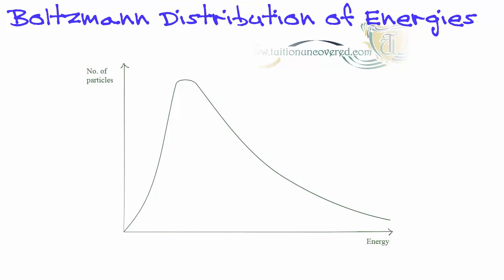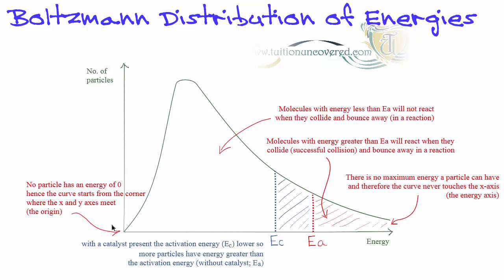Various parts of this need to be addressed. First of all, the origin, where x and y meet. There is no particle with zero energy. Every particle must have some energy, even if it's only vibrating a little bit in its position. There is no particle with zero energy. Therefore, the curve starts at zero, zero, the origin, where the x and y-axis meet.